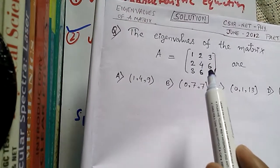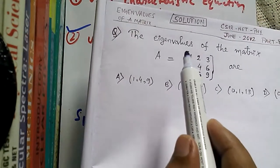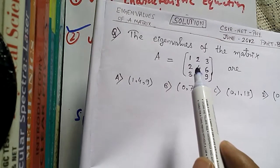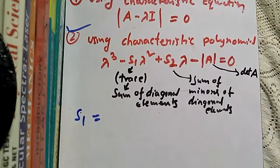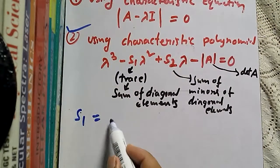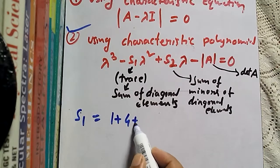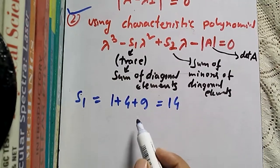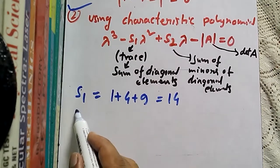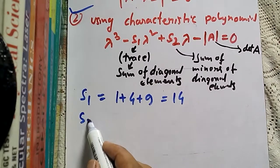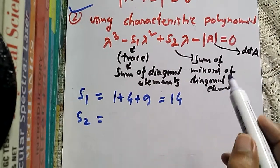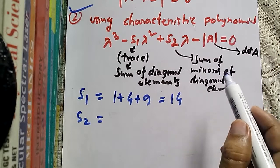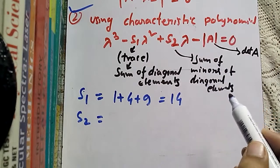The diagonal elements of our matrix are 1, 4, and 9, so S1 equals 1 + 4 + 9 = 14. Then we find S2, which is the sum of minors of the diagonal elements.